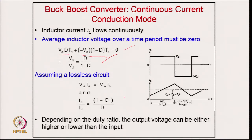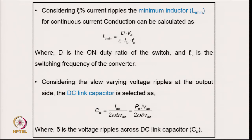Assuming lossless components, input power equals output power, and the current relation is the inverse of the voltage relation. The minimum inductance for continuous current conduction is calculated from the on-period relation, where D is the duty ratio and f is the switching frequency and η is the ripple percentage. The output DC-link capacitor is calculated considering the second harmonic voltage ripple at the output side. These two relations give the inductor and capacitor values for the converter.